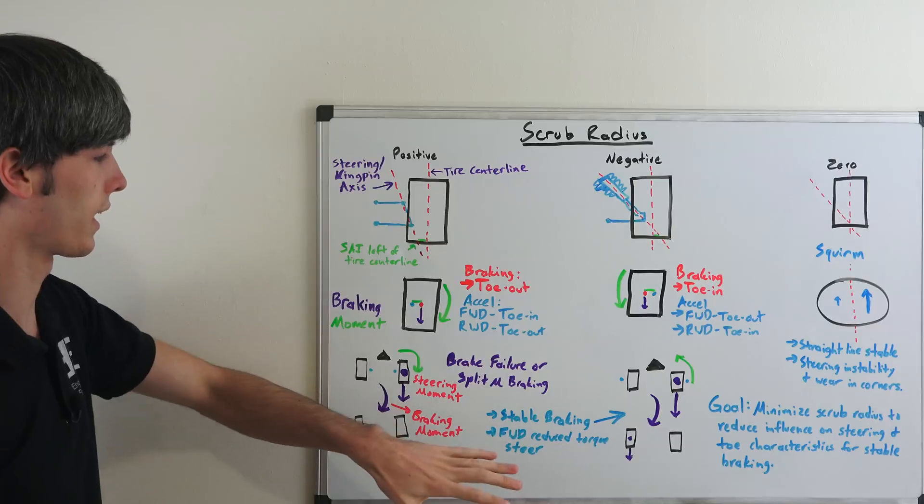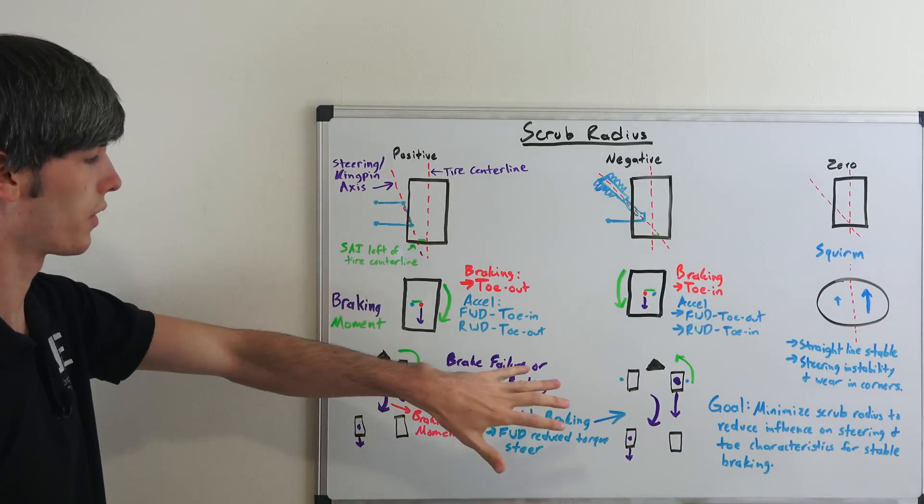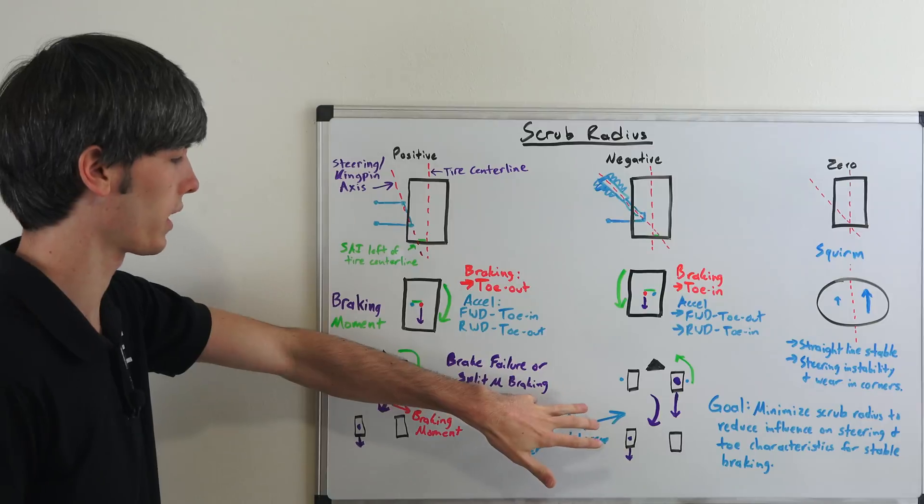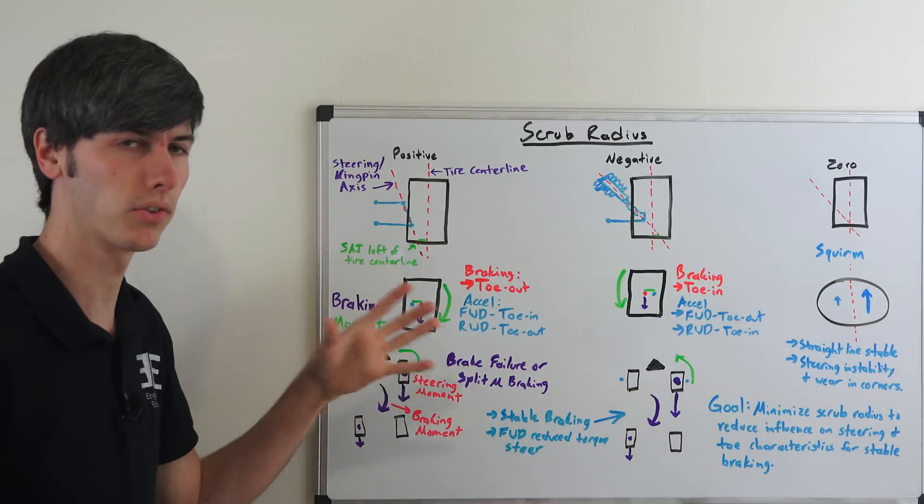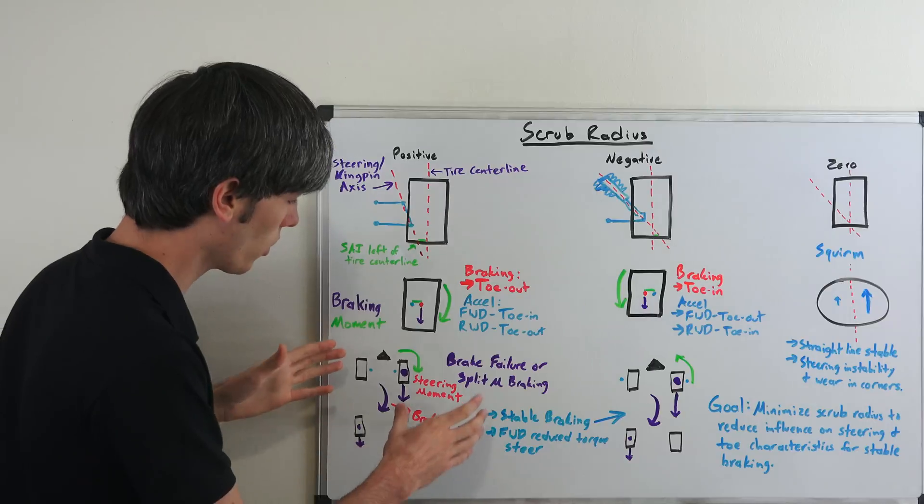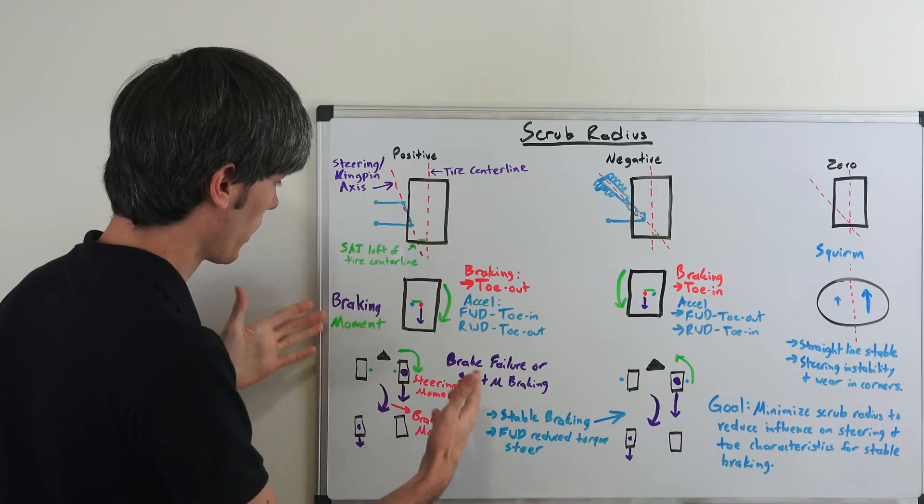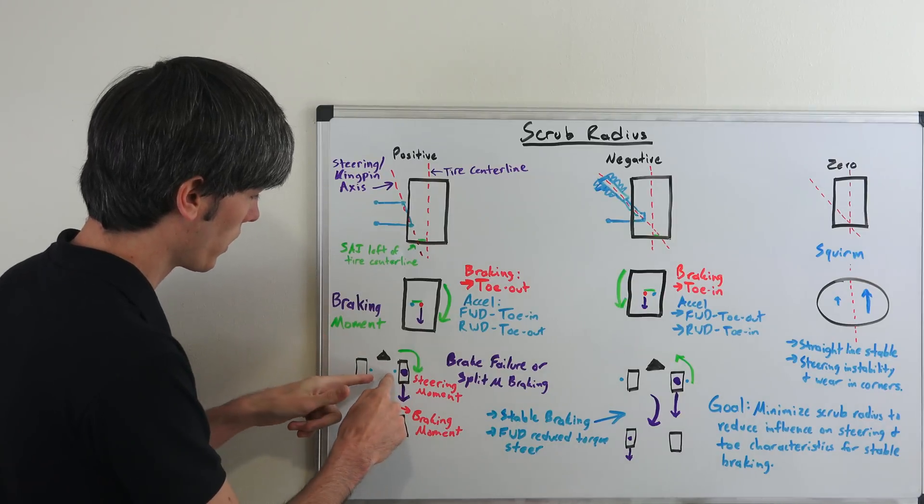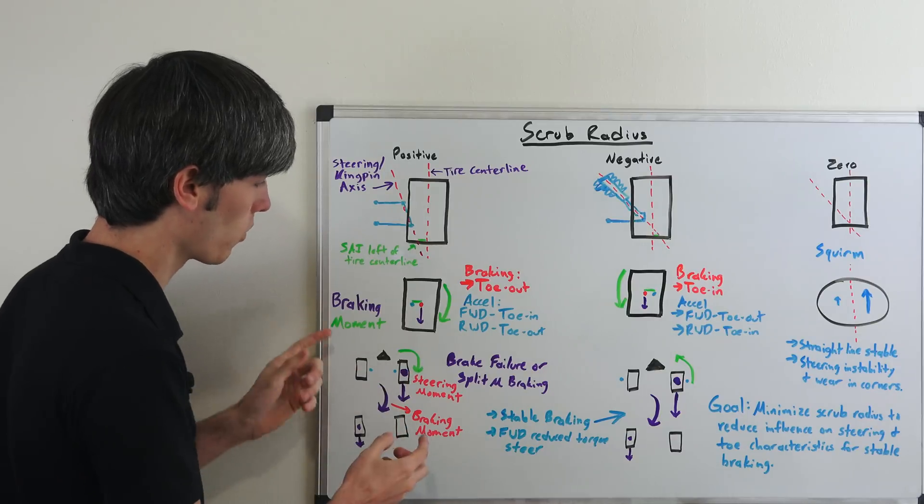Under braking a common reason that negative scrub radius is used is because under braking or if you have split mu braking, which I'll explain in a moment, it's basically going to be more stable, more safe to do. And so what we have here is our positive scrub radius. So what's going on here? We have the point at which it's going to pivot, the tire's going to pivot.